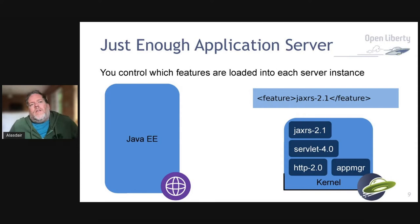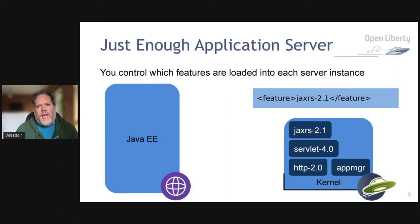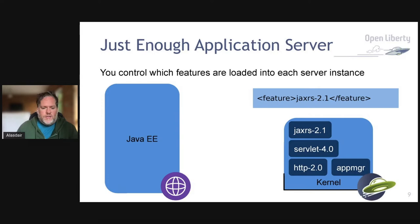Most of the benefits we talk about with Liberty stem from this feature architecture. We talk about zero migration — Liberty supports multiple versions of API features. If you're using Java EE 7 and want to move up to the latest fix pack of Liberty, you can do that without your application breaking, even though Liberty currently supports Java EE 8 and Jakarta EE 9. You can keep on the latest version of the runtime without having to do an application migration just to stay current.